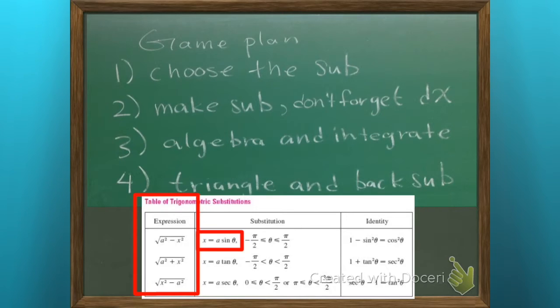If you have a squared plus x squared, you choose x is a tangent theta. If you have the square root and it's x squared minus a squared, then you choose a secant theta.